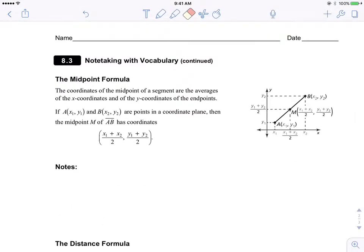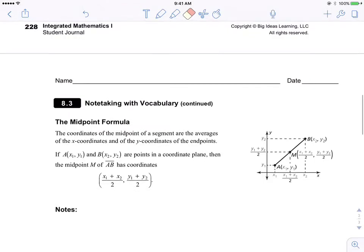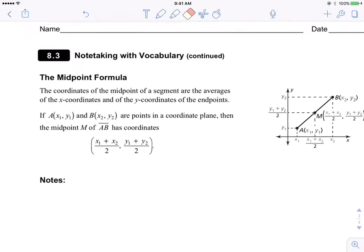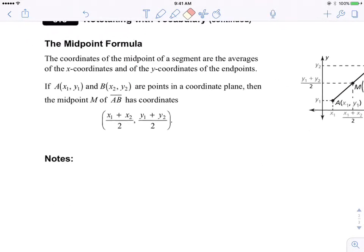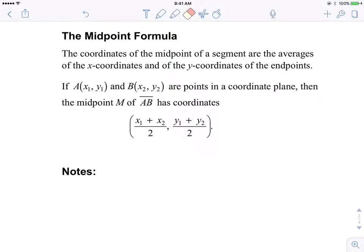Now let's look at the midpoint formula. Now here, we talked about this in our exploration. And let's read what it says. It says the coordinates of the midpoint of a segment are the averages of the X and Y coordinates of the endpoints. Let me read that one more time. The coordinates of the midpoint of a segment are the averages of the X coordinates and of the Y coordinates of the endpoints.